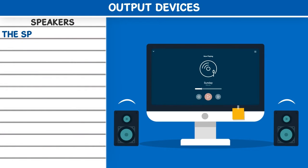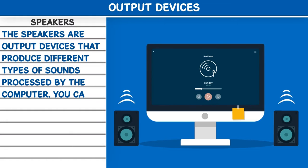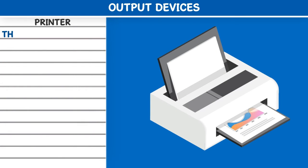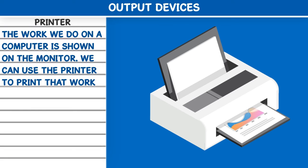Speakers: The speakers are output devices that produce different types of sounds processed by the computer. You can listen to sounds or music stored in the computer with the help of speakers. Printer: The work we do on a computer is shown on the monitor. We can use the printer to print that work or result on paper.